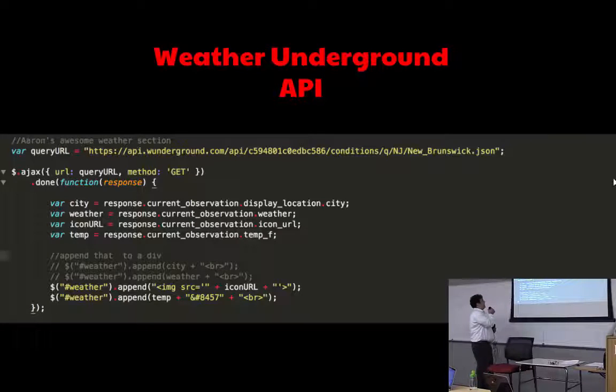And the Weather Underground API, essentially we're querying again for New Brunswick, New Jersey, specifically asking it to return JSON. And here when you get your response, it's going to save the city, the weather, the little weather icon and the temperature, all to variables. And then it's going to append them back into the div that you saw on the home screen.